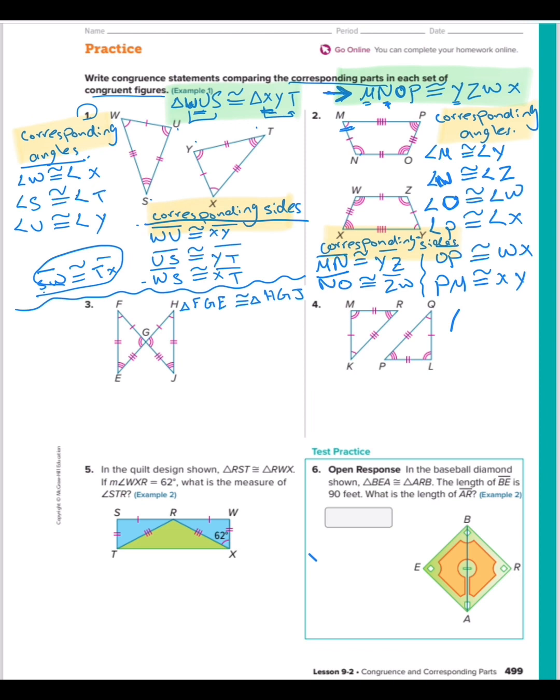Now let's start with corresponding angles. Angle F congruent with angle H. Angle G congruent with angle G, same G in both. Angle E is congruent to angle J. Because I write this one then that, take the angle from this one then take the angle from that. Finish the angles, now the sides.